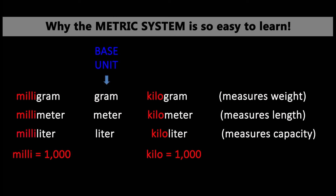Now remember with the metric system there's a hint in the unit name itself, so if you forget you can easily figure it out. If a gram is the base unit, milli and kilo mean 1,000. So it makes sense: a milligram is small, so there would be 1,000 milligrams to make a gram, and a kilogram is bigger than a gram, so that would mean there are a thousand grams in a kilogram.